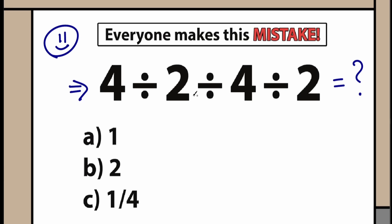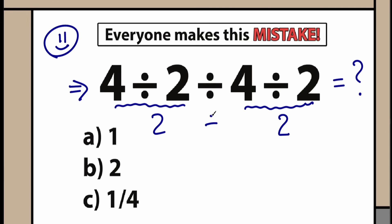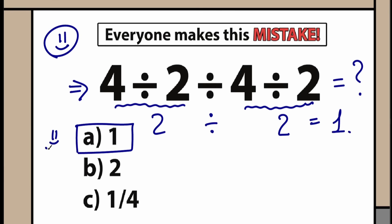A lot of students solve this question like that. They say, okay, maybe 4 divided by 2 right here equals 2. And we have the same division on the right side, 4 divided by 2 equals 2 as well. So with this division in the middle we have 2 divided by 2. As a result, 2 divided by 2 equals 1. And we have this option — this is option A. So a lot of students say the correct answer is A and they are really happy that they solved this question.